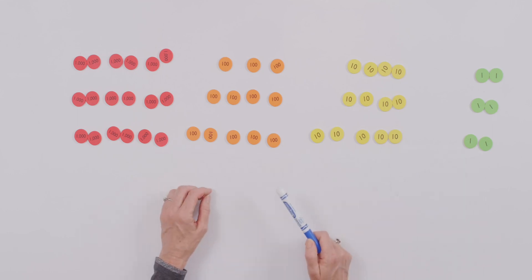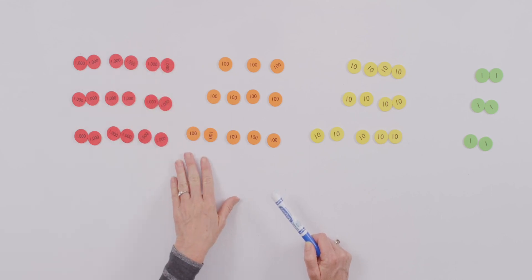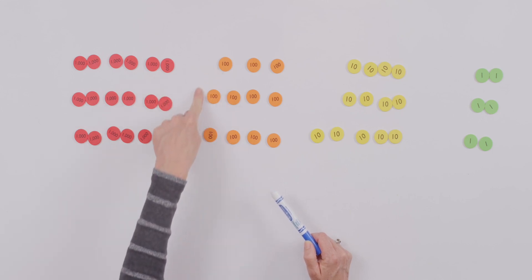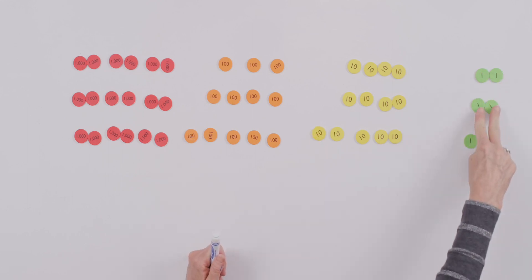Now, when we look at it with place value disks, it's so obvious which number is the greatest number, because we can look and see the value column of the hundreds has the most on this bottom one. And in fact, it also has more in the tens column, while in the ones column, the numbers are the same.